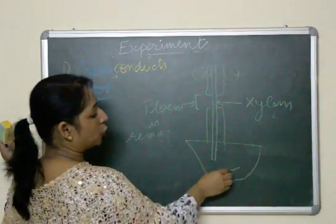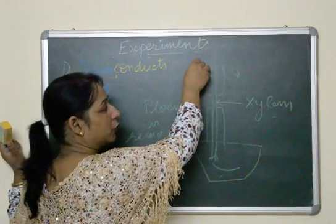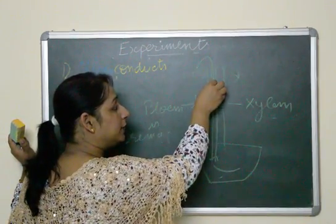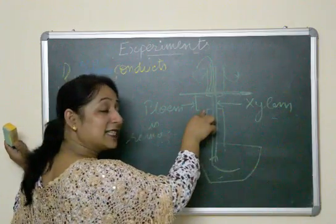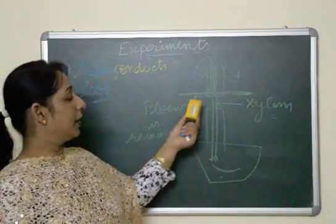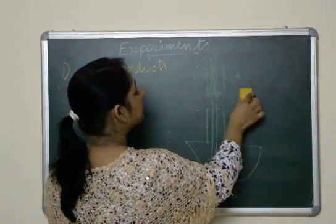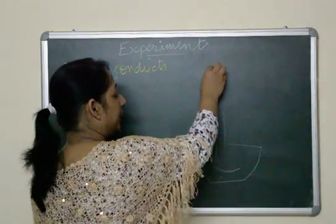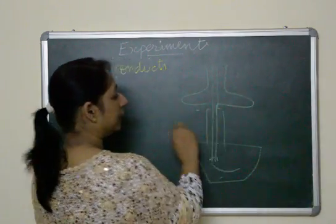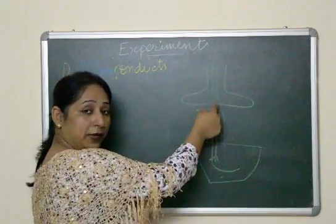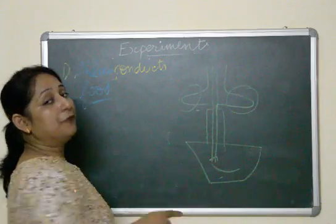With phloem removed, the plant will still absorb water, which travels up to the leaves. The leaves perform photosynthesis and prepare food. The food moves down through the phloem but stops at the point where phloem was removed. After some time, that part of the stem will swell up because food is accumulating there but cannot move further down.